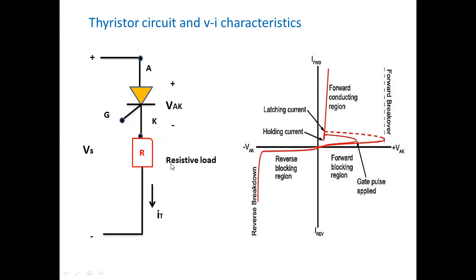What is meant by latching current and what is meant by holding current? The anode current must be more than a value known as the latching current, to maintain the required amount of carrier flow across junctions J1, J2, and J3. J2 is in a reverse blocking condition, but when sufficient voltage is applied, J2 moves toward the on-state. If this is not maintained, the device reverts to the blocking condition as anode-to-cathode voltage is reduced.